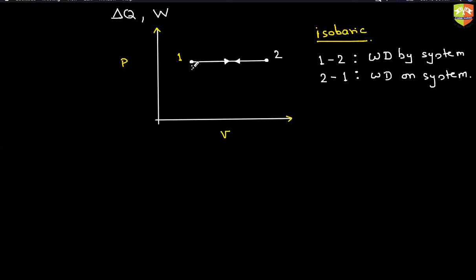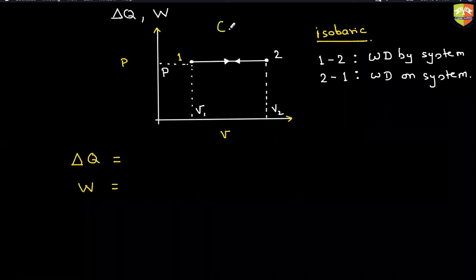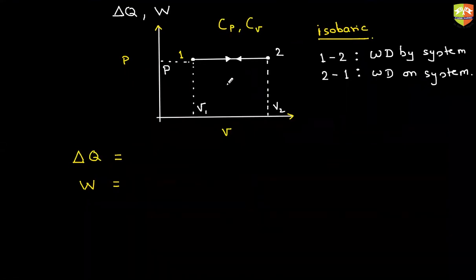Let's say the state variables are given to us — point 1 and point 2 — the volumes are V1 and V2, and at point 1 pressure is P. Can I get the value of delta Q and W for isobaric? Delta Q will be — since it is a constant pressure process — it should be N CP delta T.